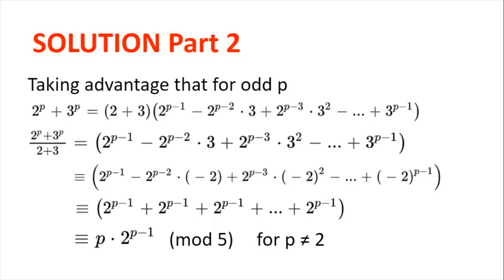We consider this in modulo 5 to see if 2 to the power of p plus 3 to the power of p divided by 5 is a multiple of 5, which would mean 2 to the power of p plus 3 to the power of p is a multiple of 25. Substituting 3 ≡ minus 2 mod 5, we get terms of the form 2 to the power of p minus 1 plus 2 to the power of p minus 1, repeated p times, giving us p multiplied by 2 to the power of p minus 1.